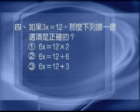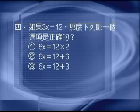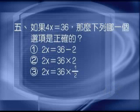第四题：如果3X等于12，那么下列哪一个选项是正确的？6X等于12乘以2。答案1。第五题：如果4X等于36，那么下列哪一个选项是正确的？2X等于36乘以二分之一。答案3。